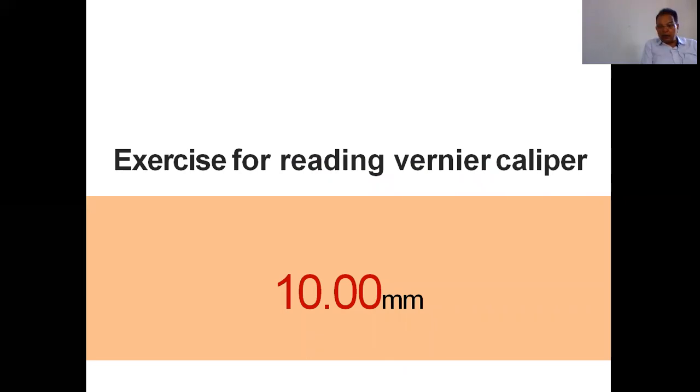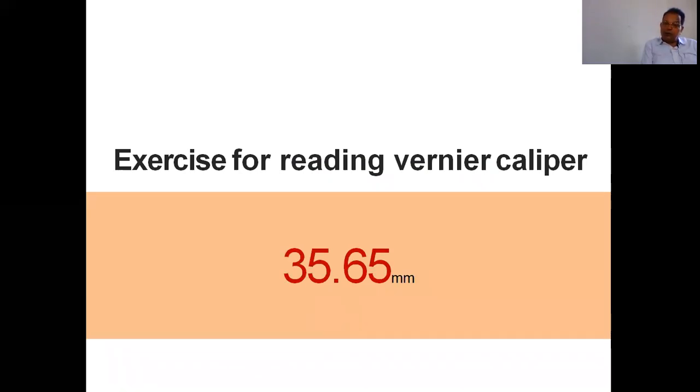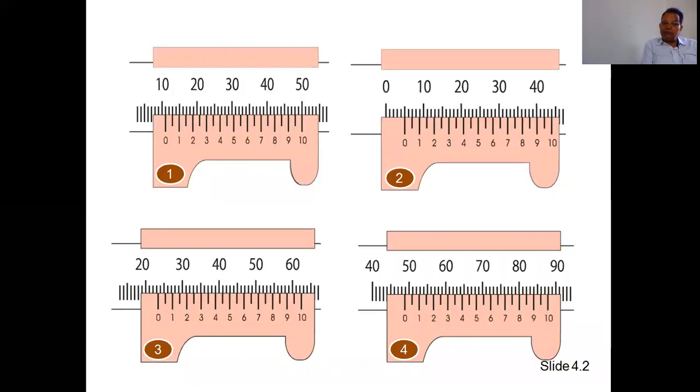And now we have to do exercises. Take 10 measurements as a simple exercise. Then measure 35.65mm. And we have given the reading scale. This is exercise 1, 2, 3, 4. You have to do the assignment.